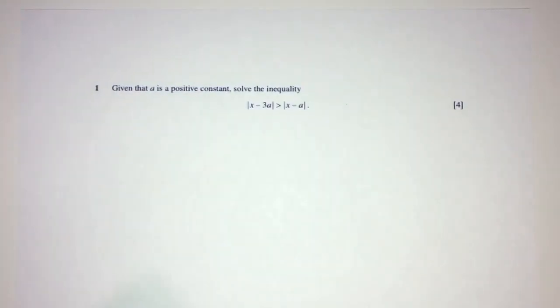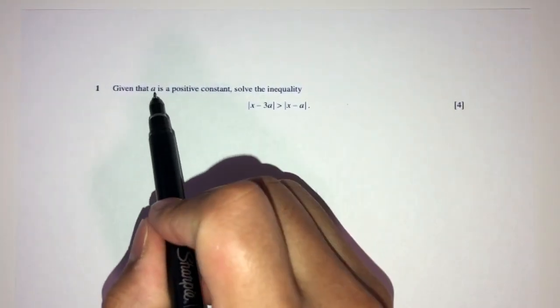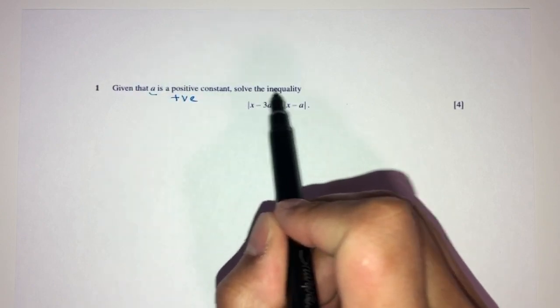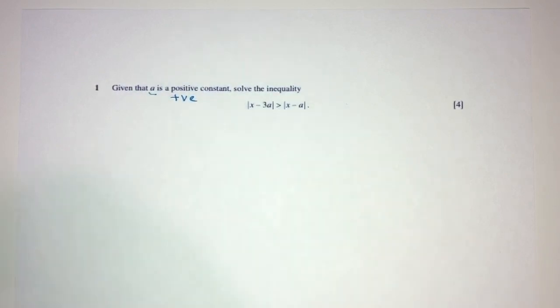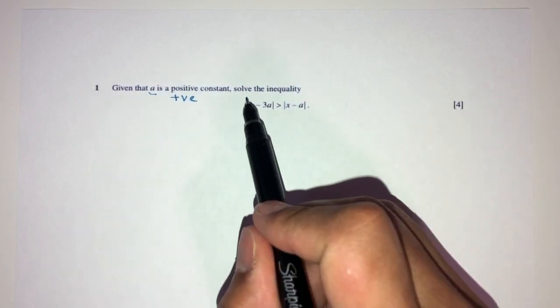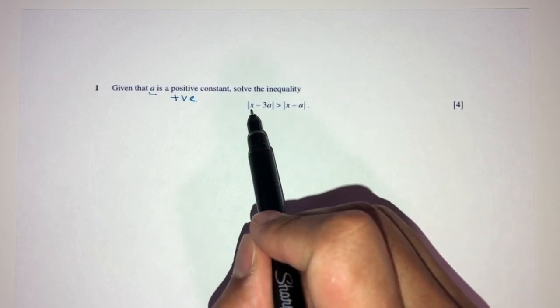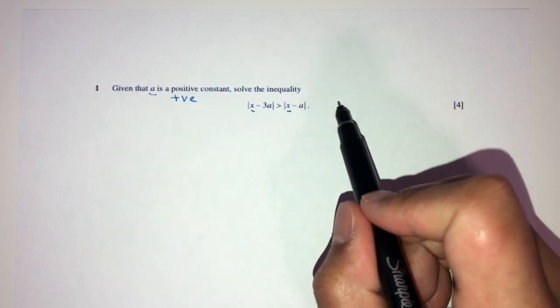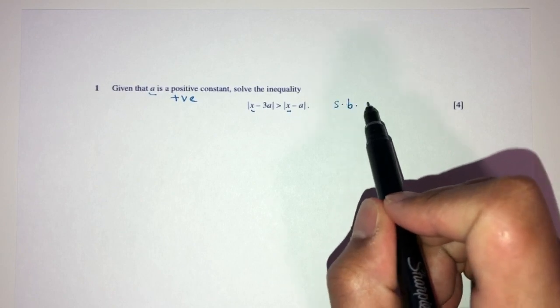Now let's move on to question number 1. So given that A is a positive value, we have to solve this inequality. Solving means finding the values of X in this inequality. Now, as we can observe, we have modulus on both sides, but we also have X on both sides. So if that's the case, we can always square both sides in this case.